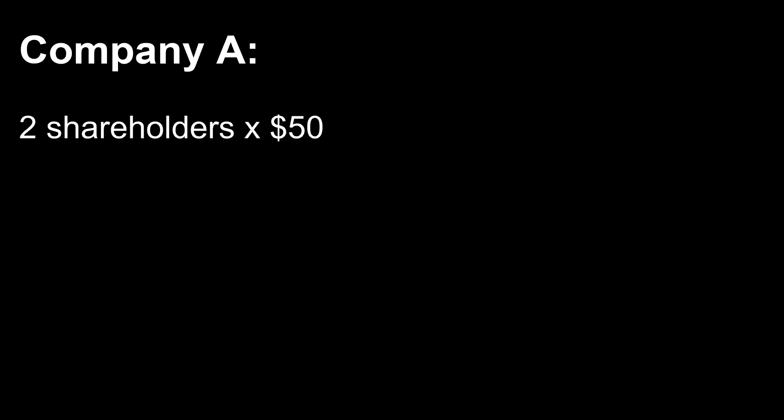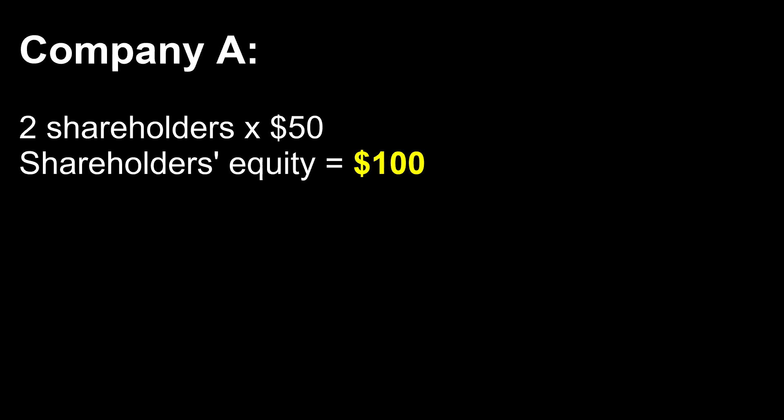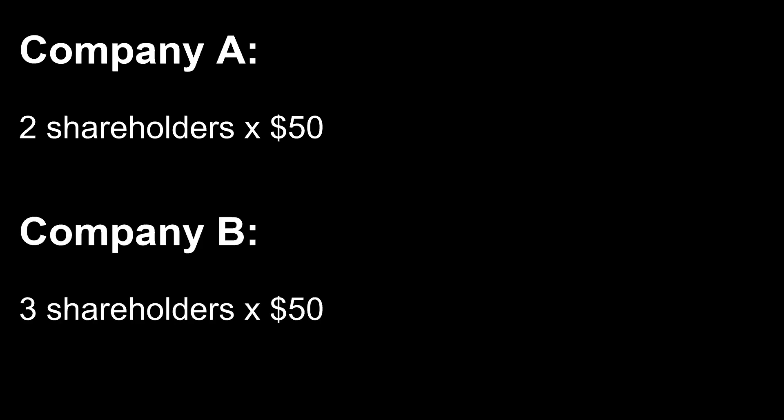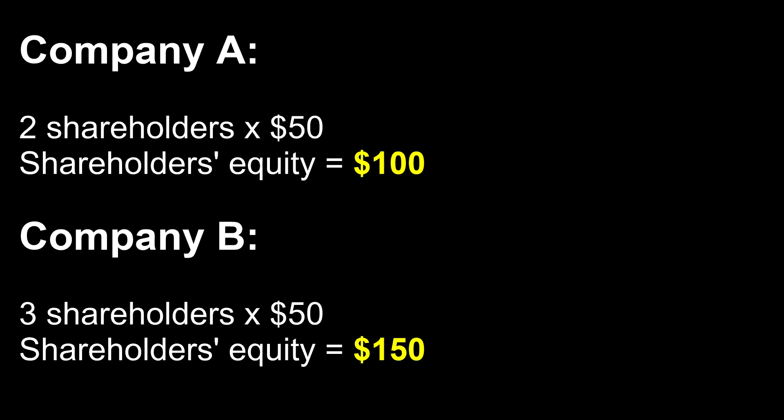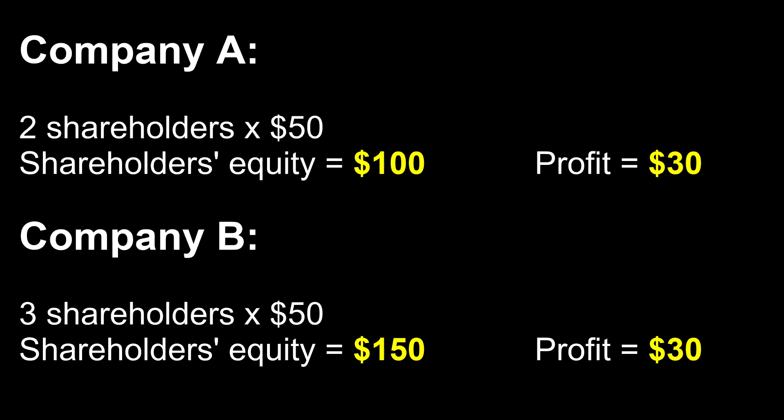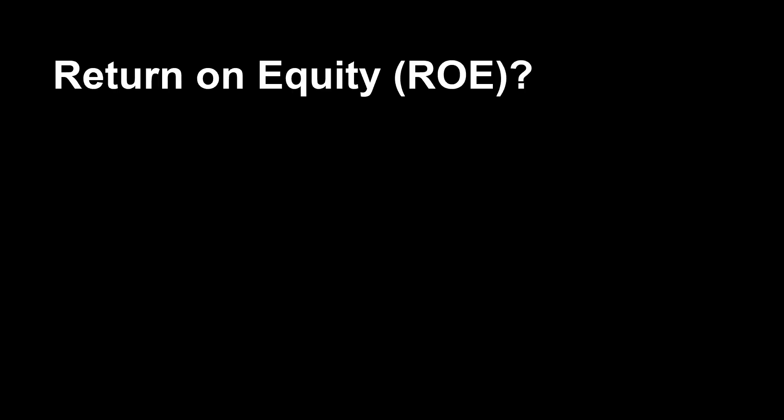Company A has two shareholders that contribute 50 each to run the business — total shareholder equity is 100. Company B has three shareholders that also contribute 50 each to run the business — total shareholder equity is 150. At the end of the year, both companies generated a profit of 30 dollars after netting the total expenses.